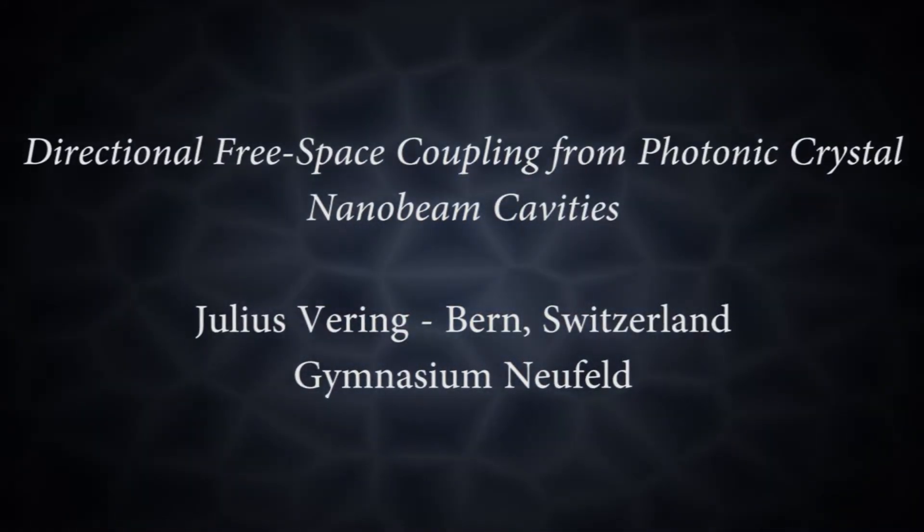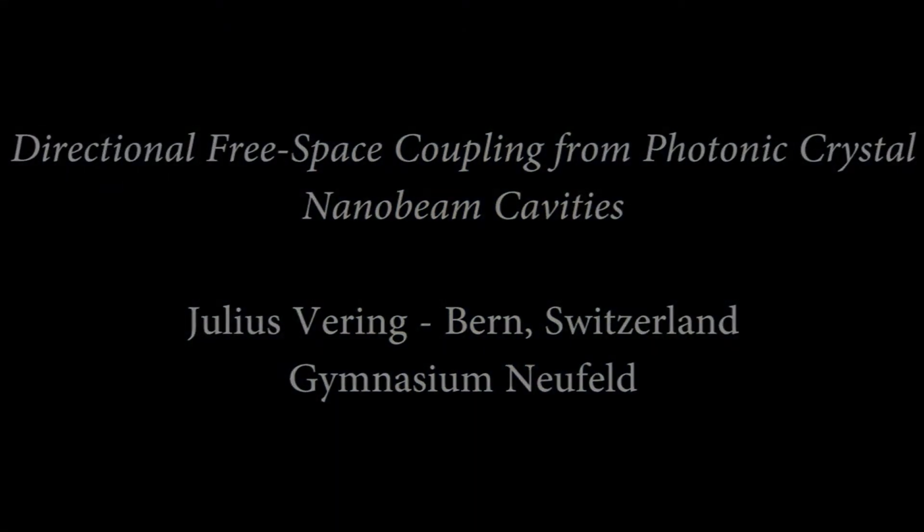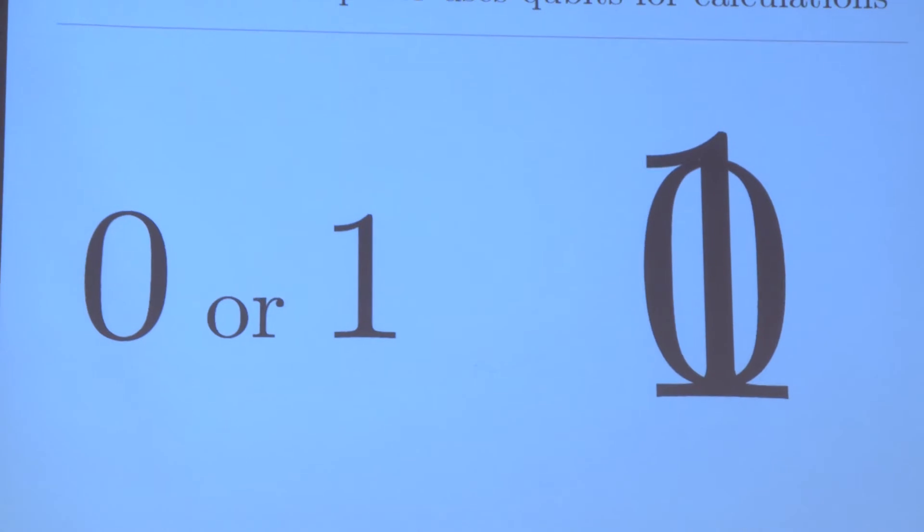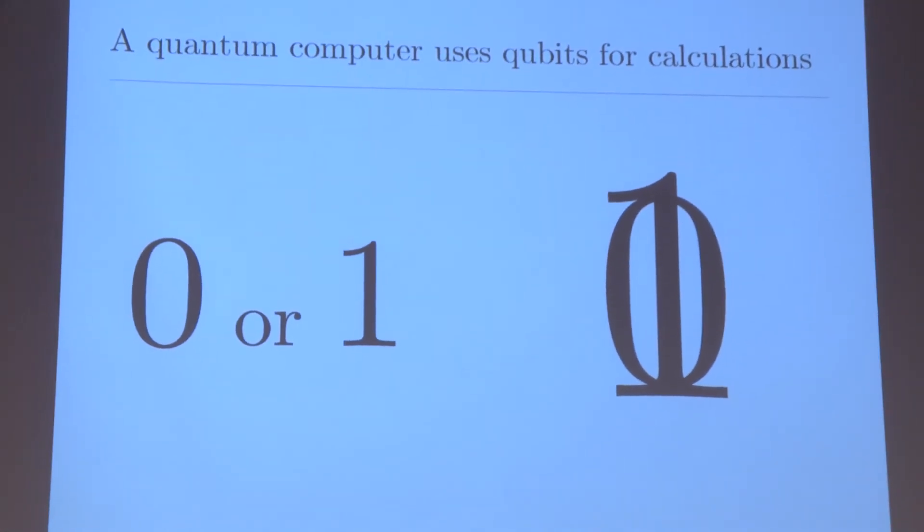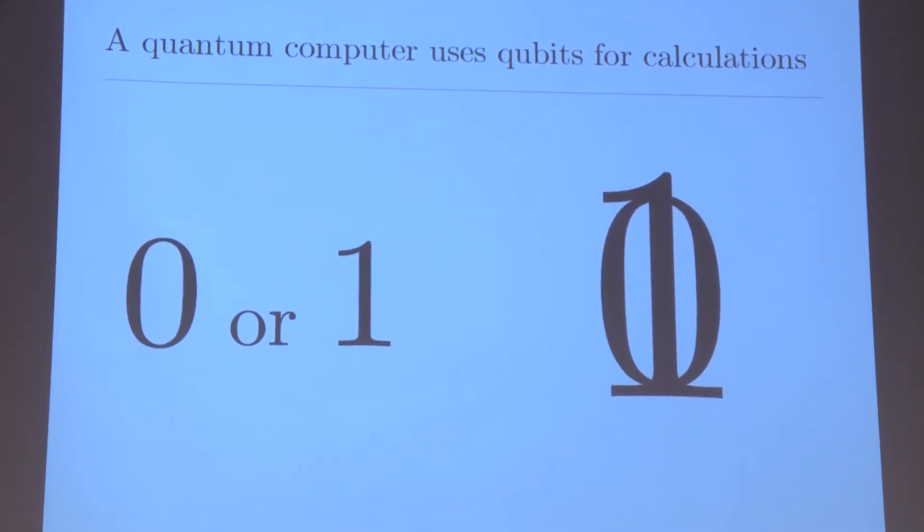What is a quantum computer and how does it work? To compare a classical computer to a quantum computer, we first need to look at the smallest unit of information. While a conventional computer uses a bit that is either on or off in zero or one state, the quantum computer uses qubits.